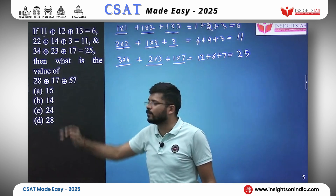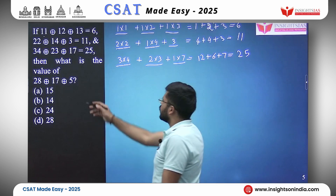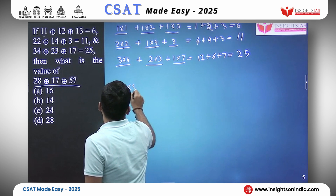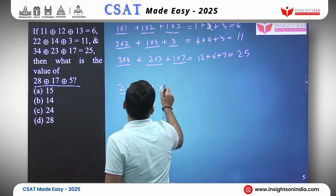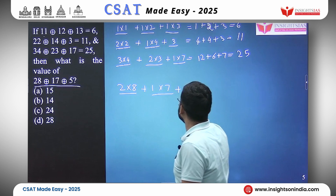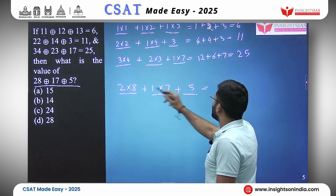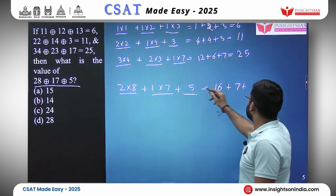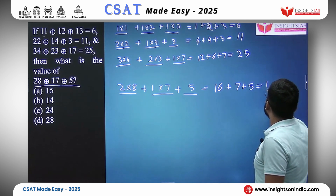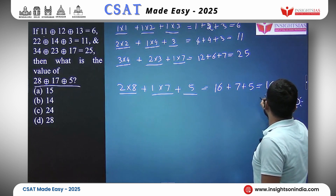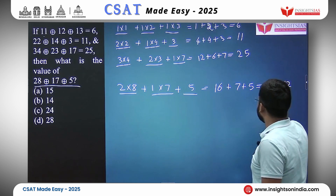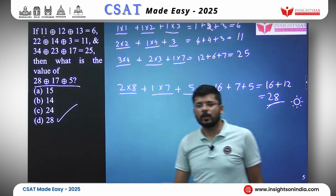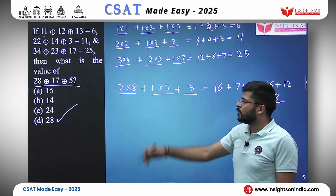So we will do the same for 28, 17, and 5: 2 into 8 plus 1 into 7 plus 5 equals 16 plus 7 plus 5 equals 28. Do we have a 28? Yes — option D, 28, and that is our answer.